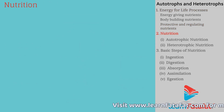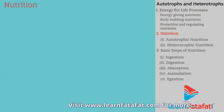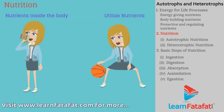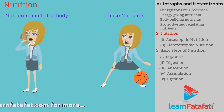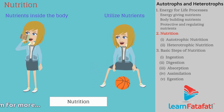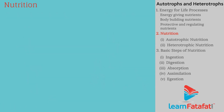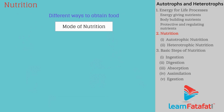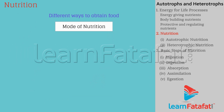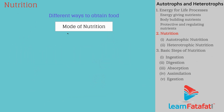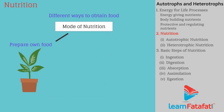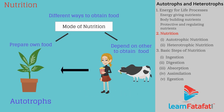Nutrition. The process of getting nutrients inside the body and utilizing them for living is called nutrition. There are different ways by which organisms obtain their food, called modes of nutrition. For example, some organisms prepare their own food, called autotrophs, and some depend on other organisms to obtain their food, called heterotrophs.